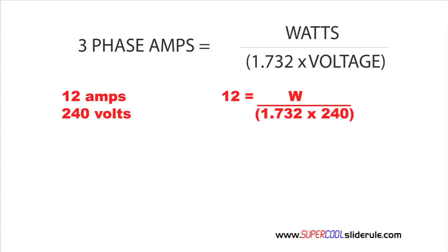So, it is 1.732 times our voltage was 240. If we do the math on this, we come out with amps are equal to watts divided by 415.68. Now, to figure this out, all we do is we multiply each side by 415.68. So, 415.68 times 12 is equal to watts.